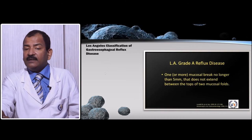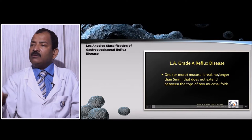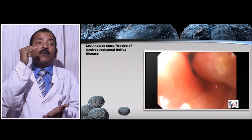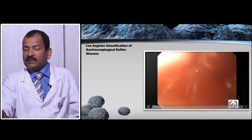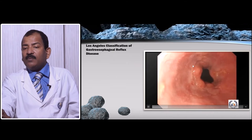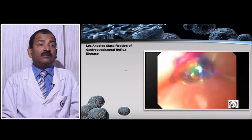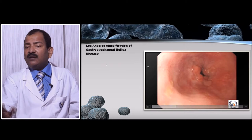GERD is well identified by endoscopy using the Los Angeles classification. Grade A: one or more mucosal breaks not more than 5 mm and not extending to the top of two mucosal folds. Grade A can be healed by medical treatment and may not require fundoplication or surgery. These mucosal breaks are visible — they are small ulcers that are not extending up to the top of the two mucosal folds.